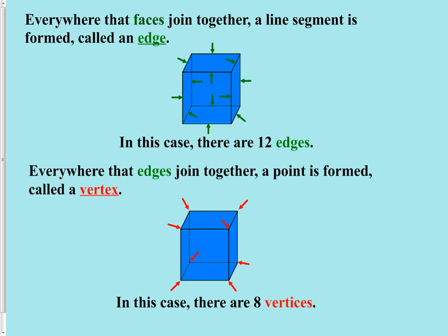When the faces of the solid join together, line segments are formed, and those line segments are called edges of the solid. And where the edges join together, a point is formed, and that point is called a vertex of the solid.